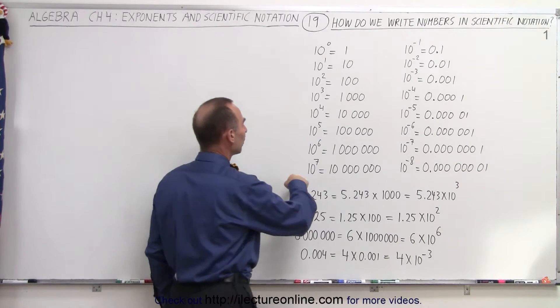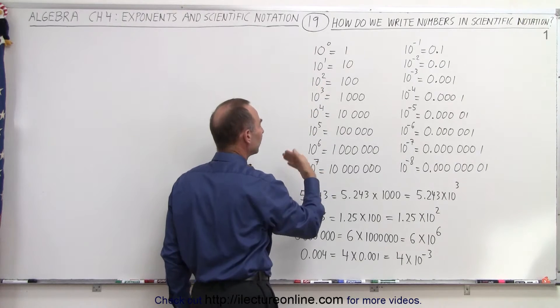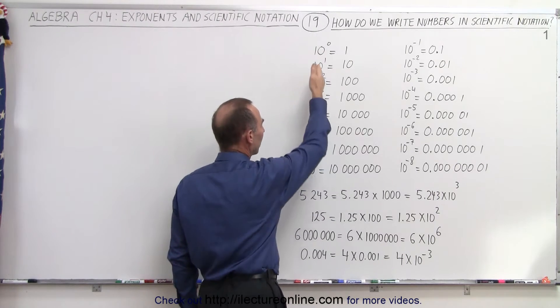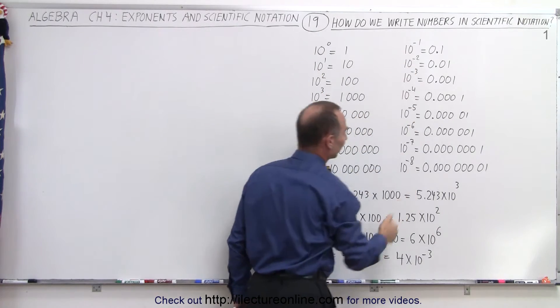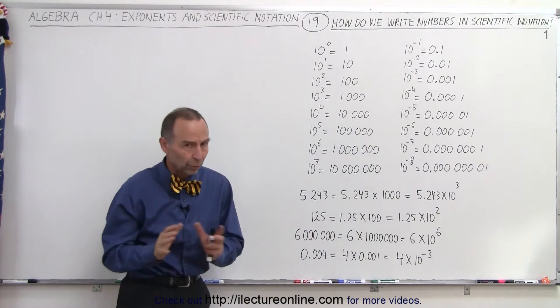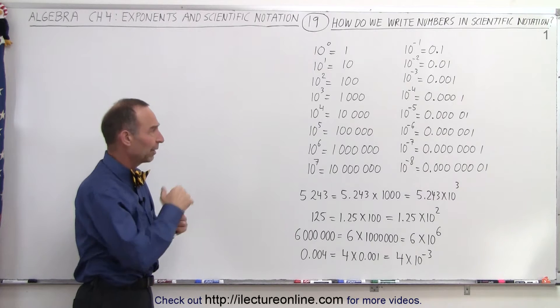Well, first of all, notice we always use the number 10 with some exponent, either a positive exponent or the exponent 0 or a negative exponent. So scientific notation always deals with the number 10 and some exponent.